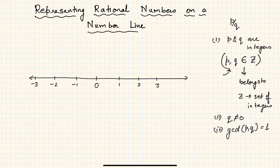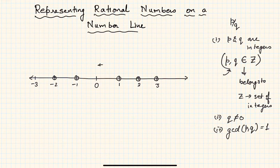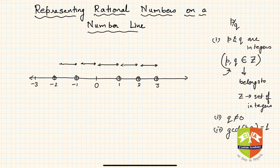Most of you have already represented integers on number lines. You take a line, put a zero somewhere, and divide it into equal parts. I have shown here: this point represents one, this represents two, and so on. Every point on the number line represents a number. I have represented zero, one, two, three, and minus one, minus two, minus three. The gap between two consecutive integers is always the same — that is the key thing. We cannot show all numbers since there are infinitely many.